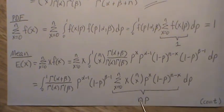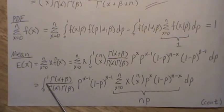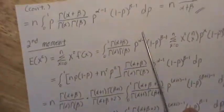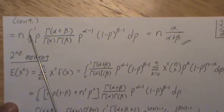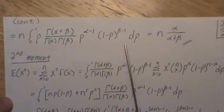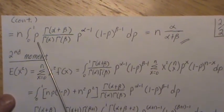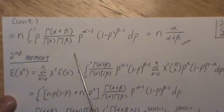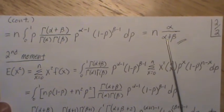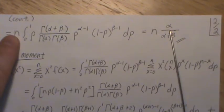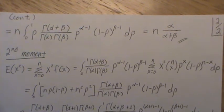Since N doesn't belong in the integration we take it out front. The P stays in the integral. But this is a beta distribution, so P times the density of P integrated over all possible values is the mean of a beta distribution, which is alpha divided by alpha plus beta. So we get N times that mean, and that's the mean of the beta binomial distribution.